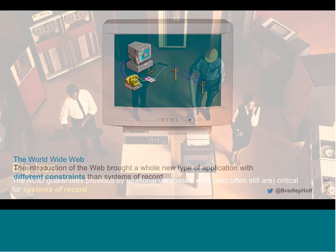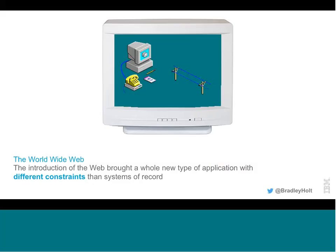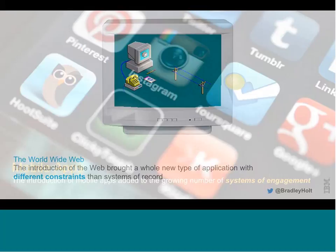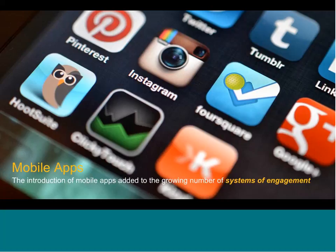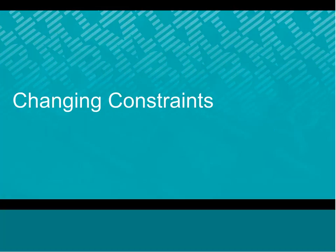Something changed though with the introduction of the web. We saw a whole new type of application emerge, and this type of application brought with it a whole new set of constraints that were different than the typical system of record constraints we had seen before. And nowadays this trend has continued with mobile apps. We tend to classify these as systems of engagement — web and mobile apps and the sorts of applications that you interact with as a customer on a day-to-day basis.